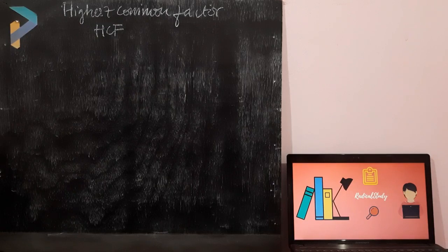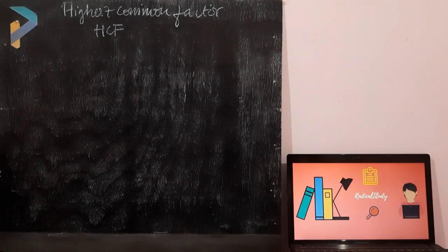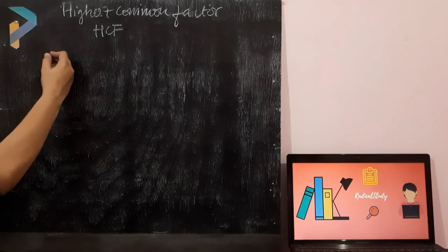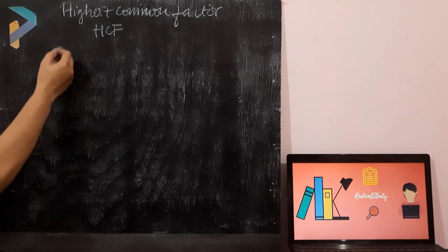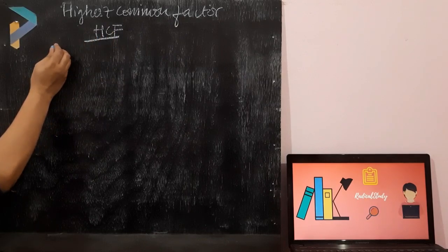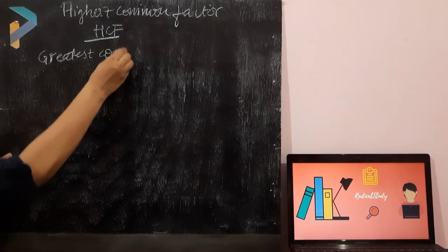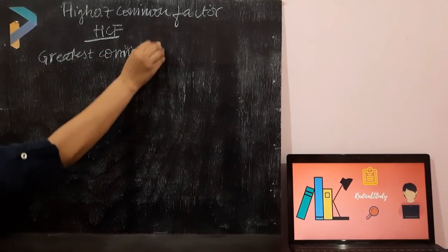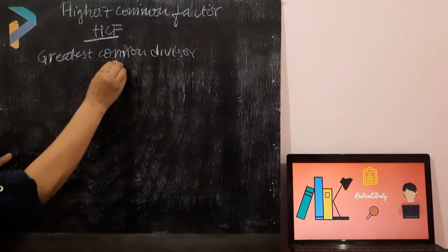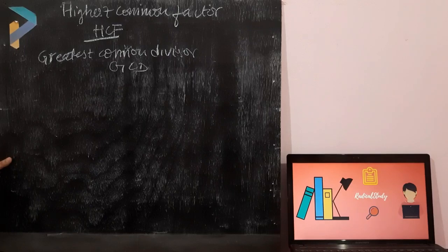Today's topic is Highest Common Factor. You must have studied LCM and HCF in your previous classes. HCF is the greatest number which is a common factor of two or more given numbers. The other terms used for HCF are: Highest Common Factor (HCF), Greatest Common Divisor (GCD), and Greatest Common Measure (GCM) — all refer to the same concept.